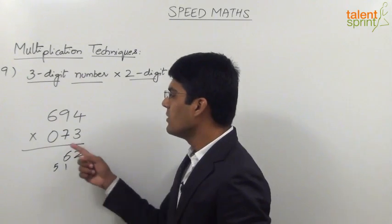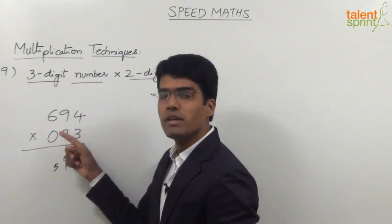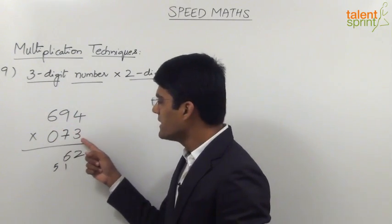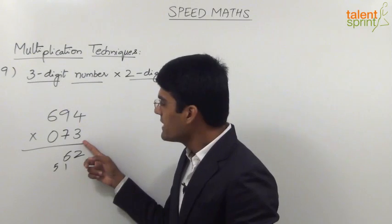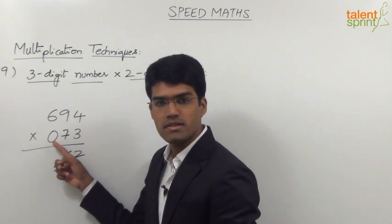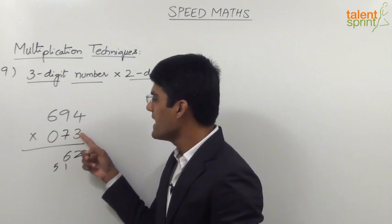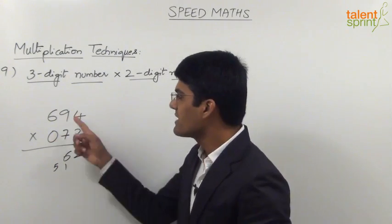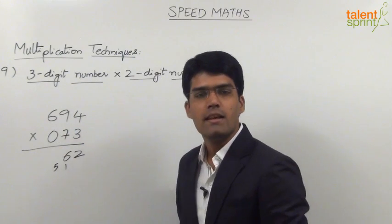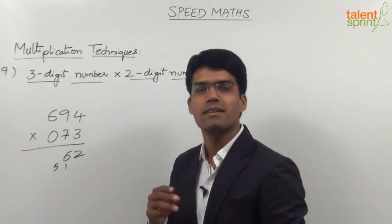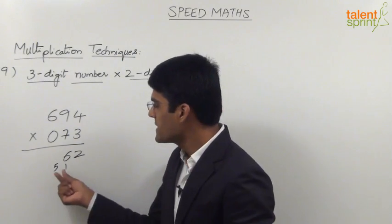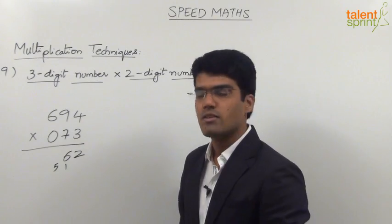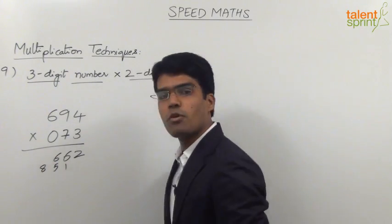The third step is cross multiplication of units with hundreds and multiplication of tens places. So 6 × 3 = 18, and 4 × 0 = 0, giving 18 + 0 = 18. Then 9 × 7 = 63. So 63 + 18 = 81, plus the carry of 5 gives 86. We take 6 in the answer and 8 is carried forward.